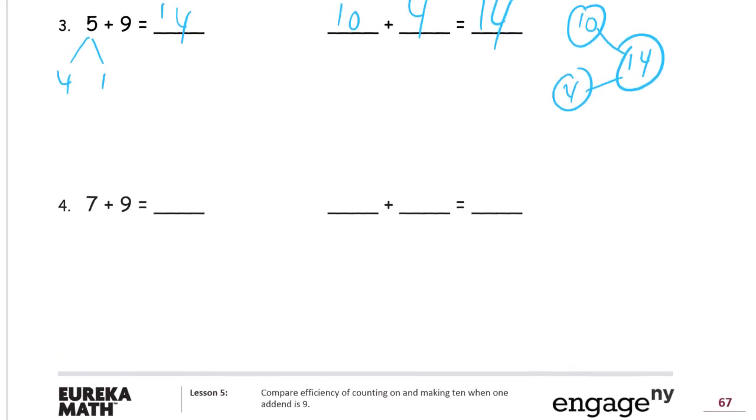We see 7 plus 9. And we're thinking right away, that's the same. Is it 10 plus 6? Because that 7 is really a 1. We can think of it as a 1 and a 6. There's our 10. And there's the 6. That's 16.